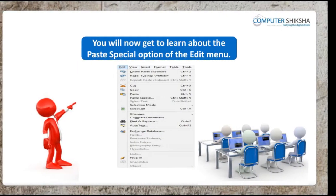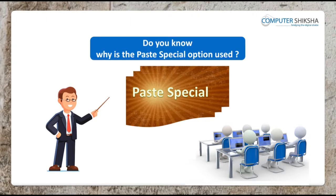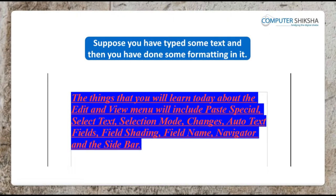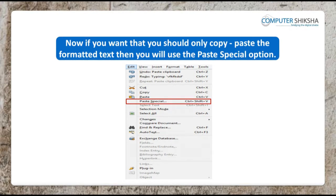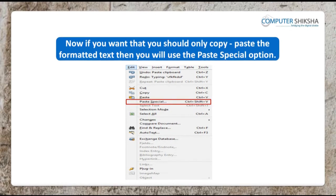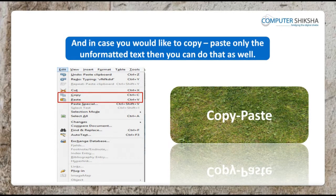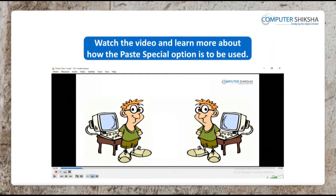You will now get to learn about the paste special option of the edit menu. With the paste special option you can paste your text in different ways. Suppose you have typed some text and done some formatting in it — if you want to copy paste only the formatted text, or only the unformatted text, you will use the paste special option.